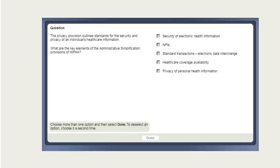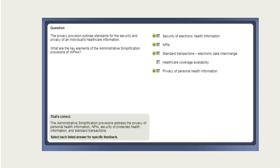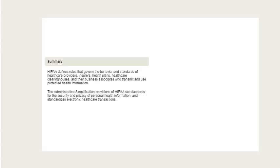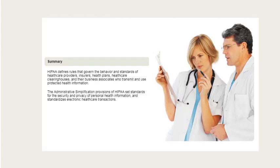The privacy provision outlines standards for the security and privacy of an individual's health care information. HIPAA defines rules that govern the behavior and standards of health care providers, insurers, health plans, health care clearinghouses, and their business associates who transmit and use protected health information. The Administrative Simplification Provisions of HIPAA sets standards for the security and privacy of personal health information and standardizes electronic health care transactions.